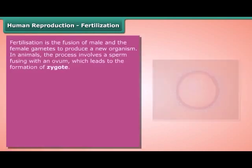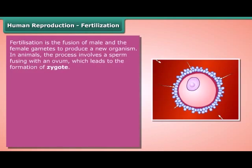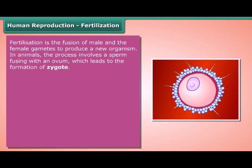Human reproduction — fertilization. Fertilization is the fusion of male and female gametes to produce a new organism. In animals, the process involves a sperm fusing with an ovum, which leads to the formation of a zygote.